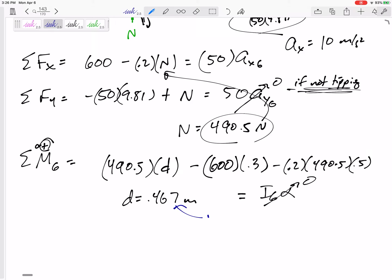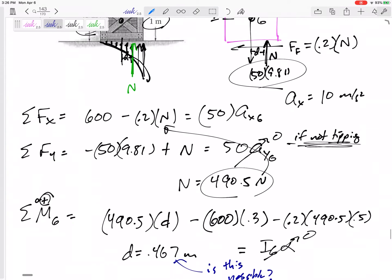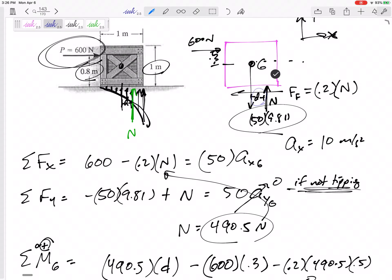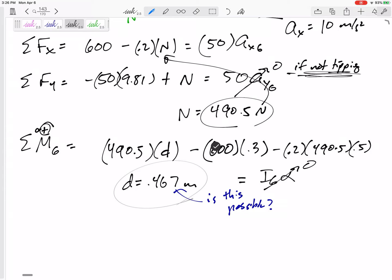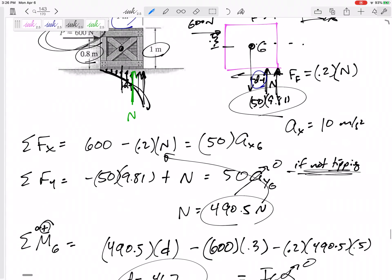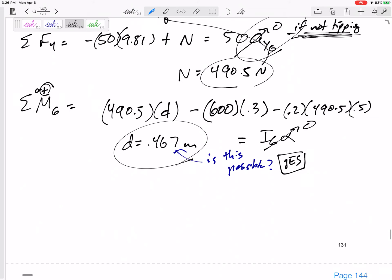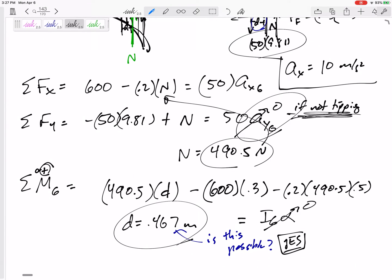And I need to ask myself, is this possible? Is this possible? Can my n get a distance 0.465? Well, let's look at this dimension here. Yeah. I mean, it could really get all the way over here to 0.5 away. So as long as this is possible, as long as it's still on the box, then yes, this is possible. So my assumption was correct. It is not tipping. And so, yes, here's my final answer. A is 10 meters per second squared.